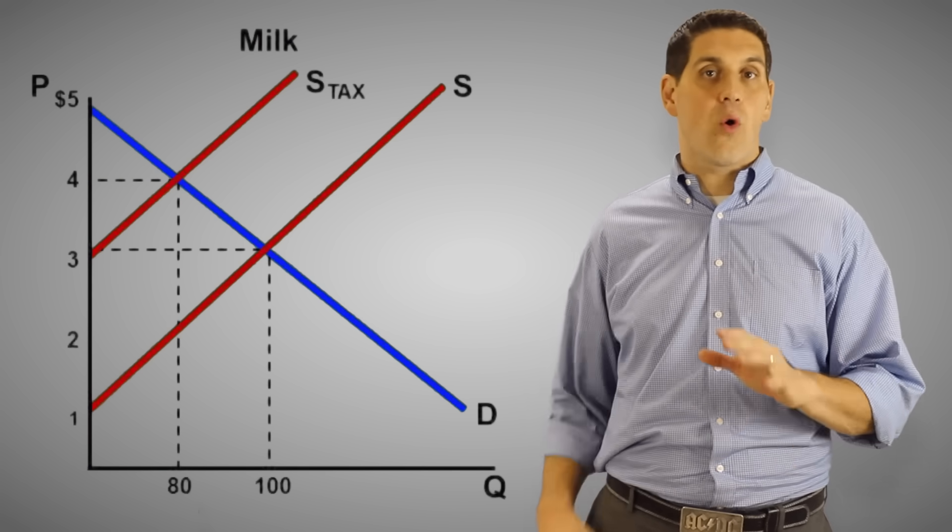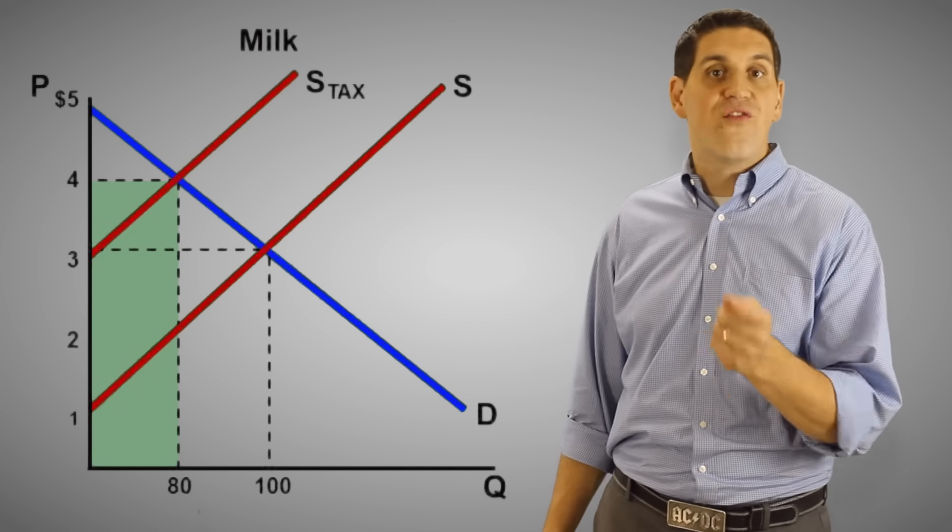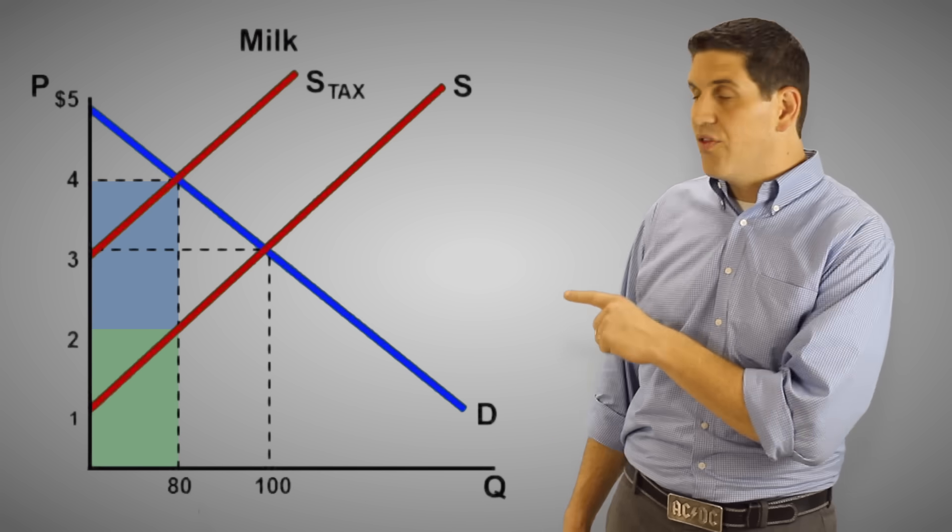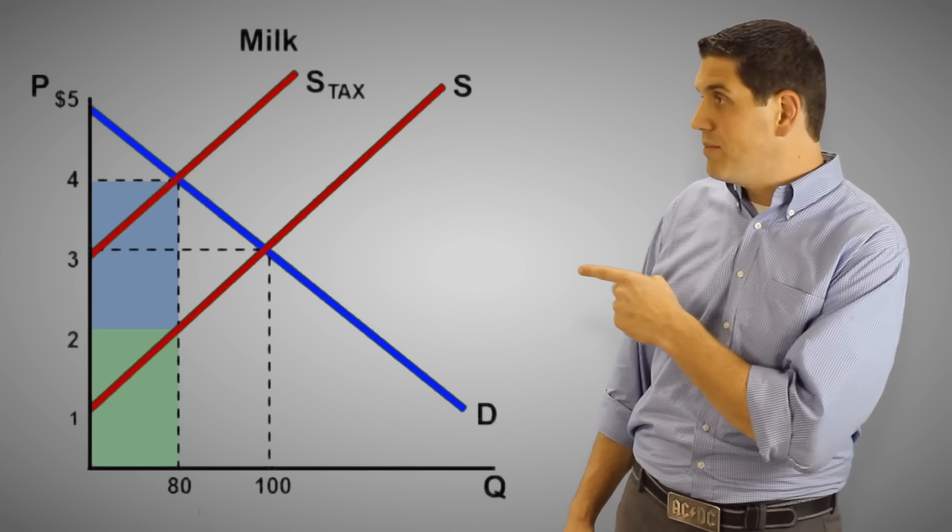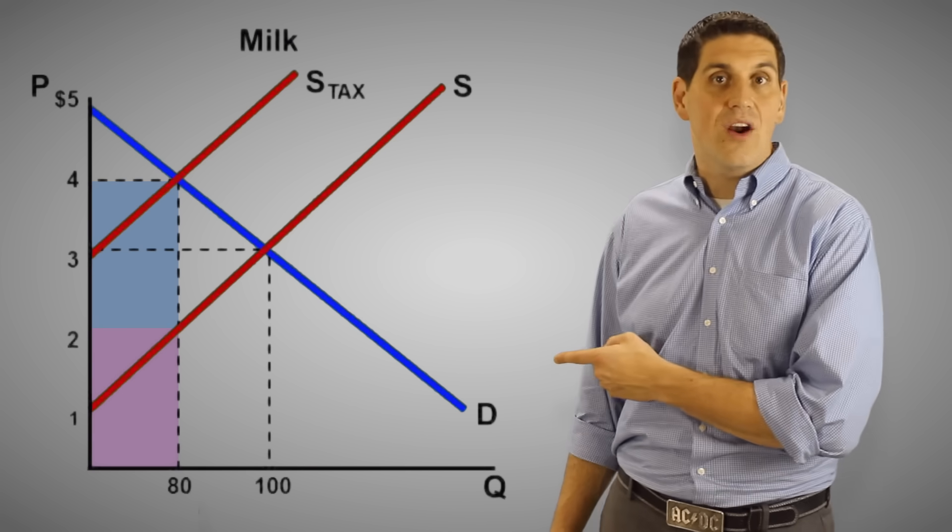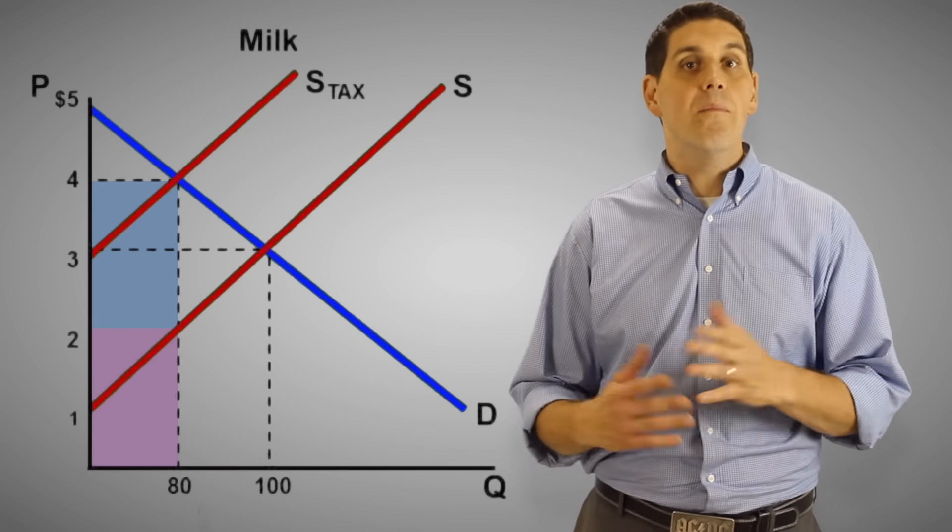So the total expenditures or spending on milk is $4 times 80. That big box is spent total on milk. And this right here, the $160, 2 times 80 is how much the government gets to keep. And the other $160 right there is how much the producers get to keep of the money consumers spent.